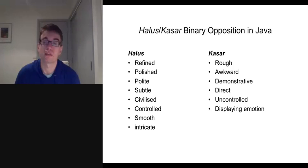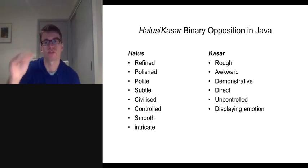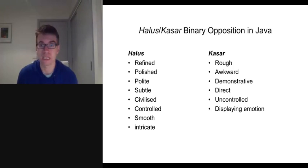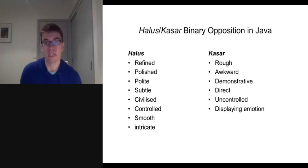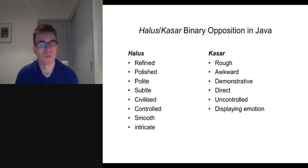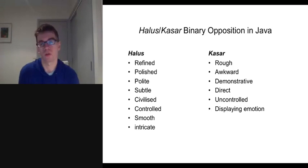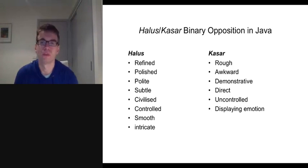The notions of Alus and Kasar are also strongly linked to the Javanese language, which is a hierarchical language with different levels of speech. You speak these different levels depending on your social status within the hierarchy in Javanese society. It can be very impolite to use the incorrect language level when addressing particular people. A commoner would usually have to speak up to someone of a much more noble status, whereas someone of a noble status would speak down to someone of a common status.